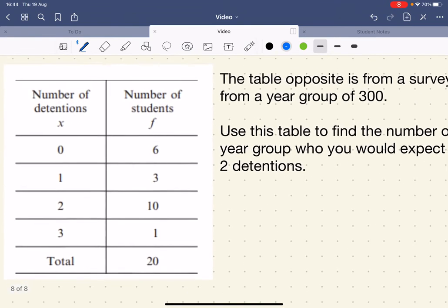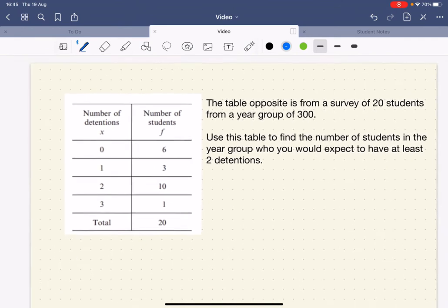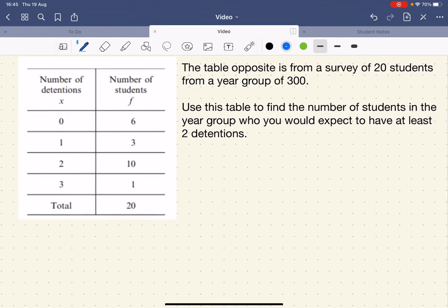Let's have a look at another one. This time we've got an experimental one. We've got a table from a survey of 20 students, taken from a year group of 300.